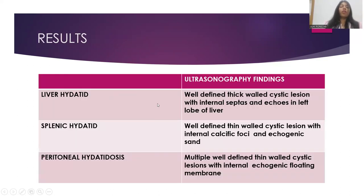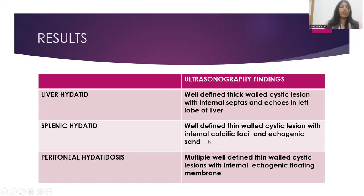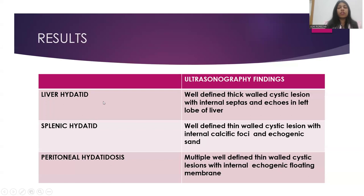The results of my study were as follows. The first patient had a well-defined thick-walled cystic lesion with internal septae and echoes in the left lobe of the liver, consistent with liver hydatid. In the second patient, thin-walled well-defined cystic lesions with internal calcific foci and echogenic sand were seen in the splenic parenchyma, making the diagnosis splenic hydatid. The third patient had multiple well-defined thin-walled cystic lesions with internal floating echogenic membrane in various stages encountered in the peritoneal cavity, consistent with peritoneal hydatidosis.